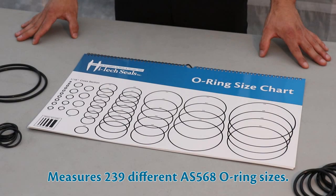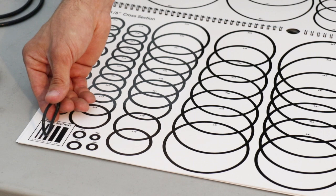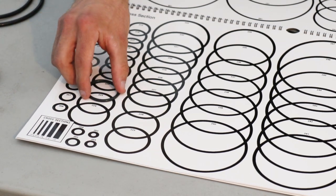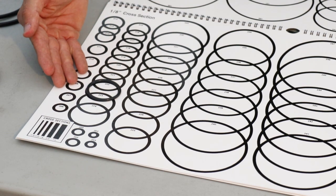Let's start with the o-ring flip chart. It's used for measuring 239 different AS568 o-ring sizes. To determine your o-ring's cross section, place it against the legend in the bottom left hand corner. Then place the o-ring over the silhouettes on the corresponding page to the cross section and move the o-ring over the various sizes until the correct size is found.